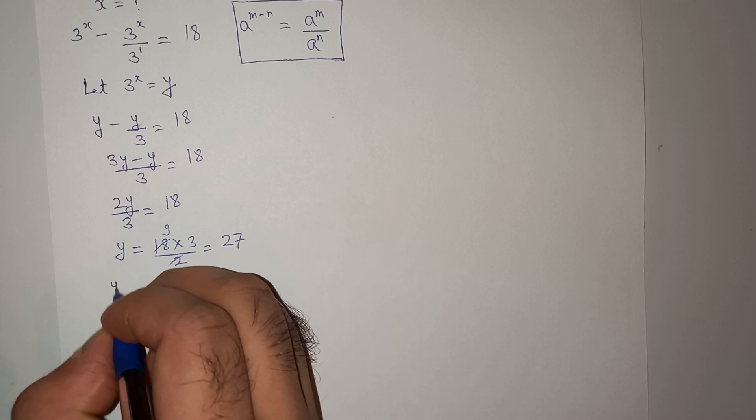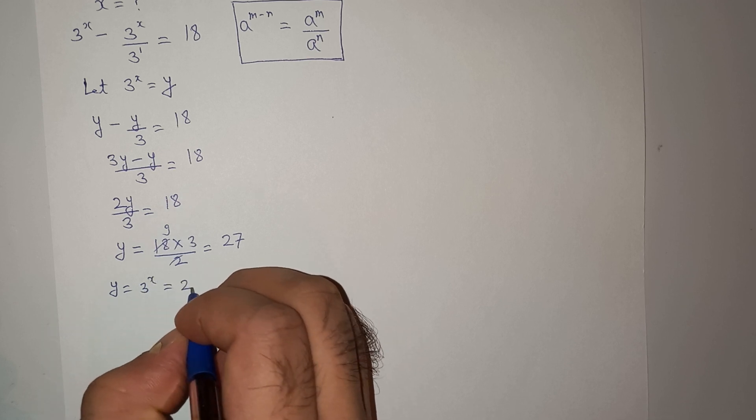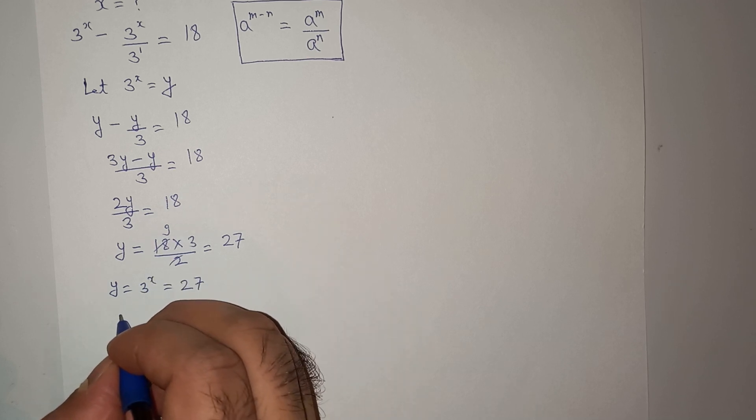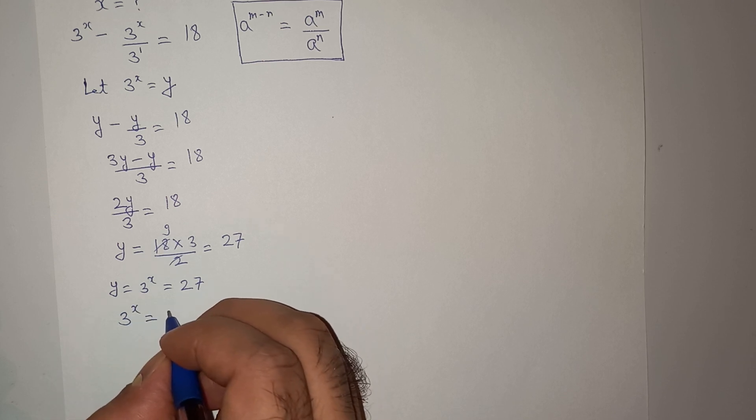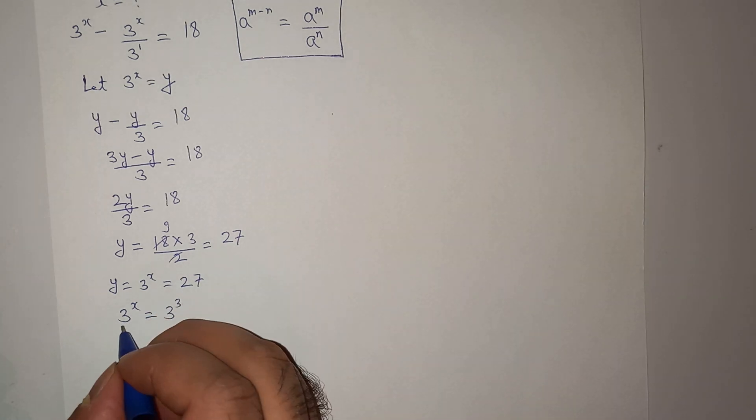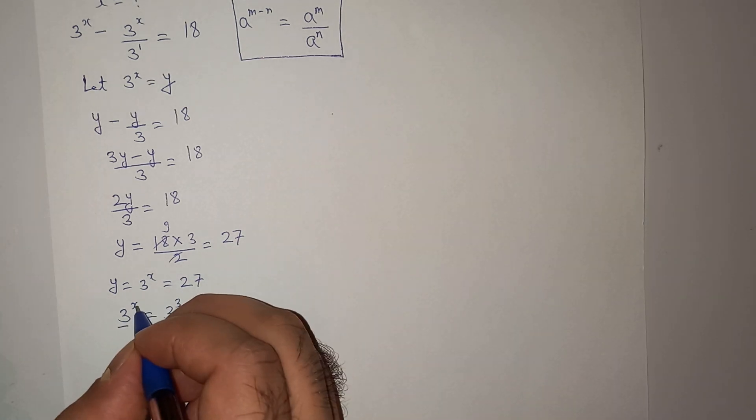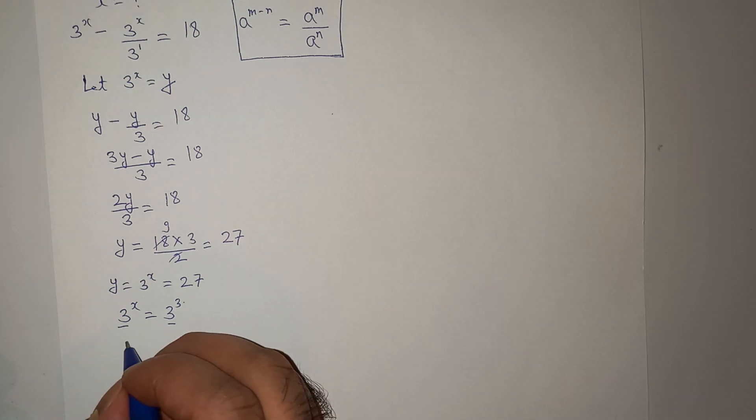But we have assumed y as 3 power x which equals 27. So 3 power x and this 27 can be written as 3 cube. So as we can see the base is same, so the exponent should also be the same. So the value of x will be 3. So this is our answer.